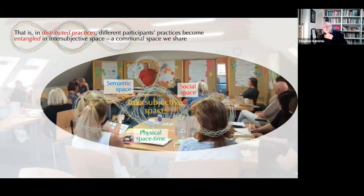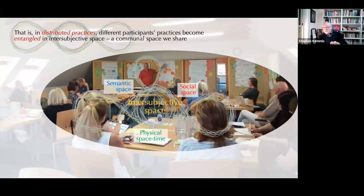Just to underline the point: in distributed practices, people are entangled with one another in intersubjective space—the space between us, a communal space that we all share. So it looks like Stephen is controlling this space, and in a way, at the moment in this photograph, he may be. But all of these other people will be having their say and changing what happens, in the intersubjective space that they share.